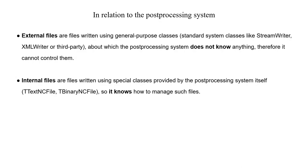In relation to the post processing system, files are divided into two categories: external files and internal files. External files are written using general-purpose classes — standard or third-party — such as StreamWriter or XmlWriter. The post processing system knows nothing about these files and therefore cannot control them. Internal files are written using special classes provided by the post processing system itself, such as TextNcFile or BinaryNcFile, so the system knows how to manage, display, or post-process them.